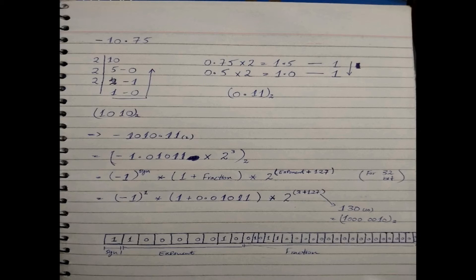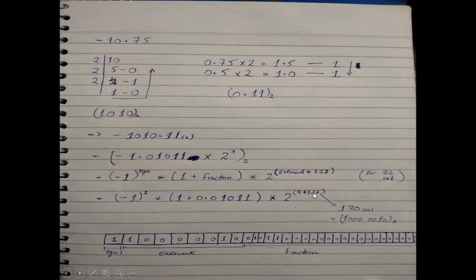Now we apply the single precision formula: (-1)^sign × (1 + fraction) × 2^(exponent + 127), where 127 is the bias term for 32-bit representation. Since the number is negative, the sign is 1. The exponent from normalization is 3, so we add 3 + 127 = 130. We then convert 130 into binary, which gives us 10000010.